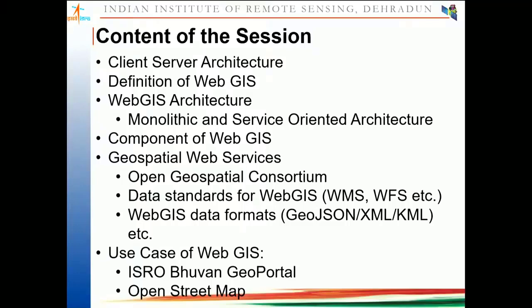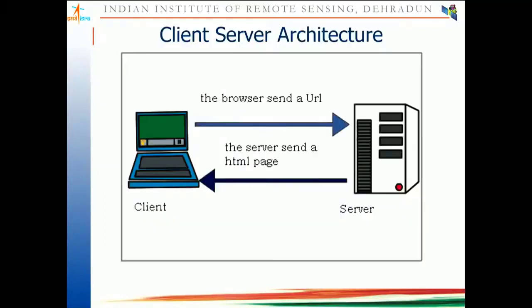These formats allow you to exchange data, specifically spatial data, over the web environment. One use case of Web GIS — I have already demonstrated ISRO's Bhuvan Geo Portal — we will cover that a little bit today as well. The last one is OpenStreetMap, and we will see how these products are called Web GIS products.